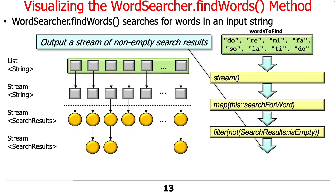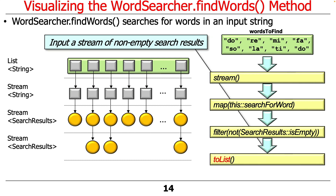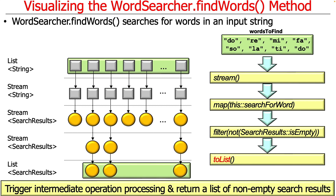Now we'll end up with a stream of potentially fewer entities — the same size if there were no empty search results, or smaller if there were empty ones. Only non-empty search results come through to the next phase. The final thing we do is use the terminal operation toList to convert this stream into a list. toList does two things: it triggers the intermediate operation processing, meaning nothing happens until toList is reached — that's why streams are considered lazy. We'll talk more about lazy later. So we trigger intermediate operation processing and return a list of non-empty search results.